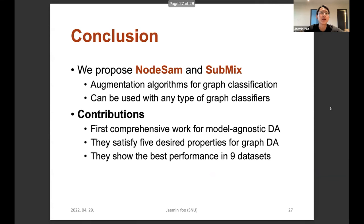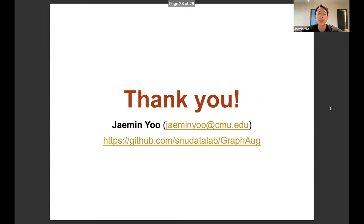Let me conclude this talk. In this work, we propose two novel algorithms for graph augmentation, NodeSAM and SubMix. They are model-agnostic, so they can be used with any type of graph classifier, and they are specifically designed for improving accuracy for graph classification. Our contributions: this is the first comprehensive work for model-agnostic graph augmentation — there have been various works for model-specific augmentation, but no comprehensive work for model-agnostic ones. Our algorithms satisfy five desired properties for effective graph augmentation and show the best performance across nine real-world datasets. You can email me questions and see our code and datasets at the provided link.